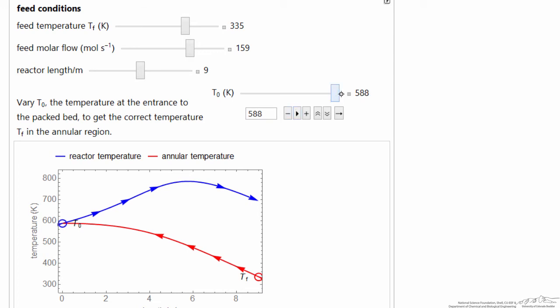However, I could also pick a T0 that's much lower. That also is a correct solution. It's not a very interesting solution because there's no reaction, but it satisfies all the differential equations. So understand there's multiple steady states possible for this type reactor, one with essentially no conversion and one with high conversion.